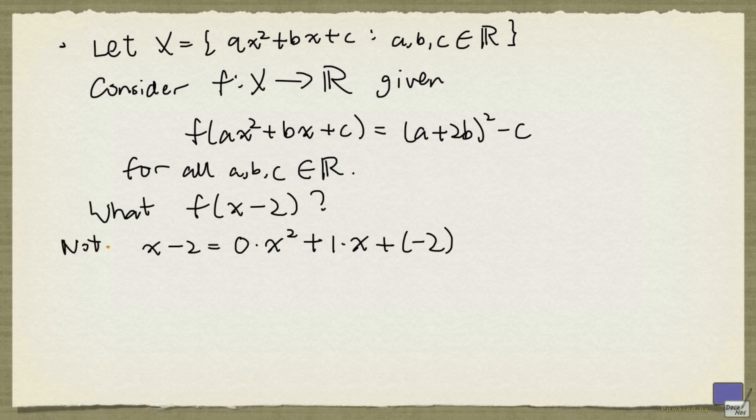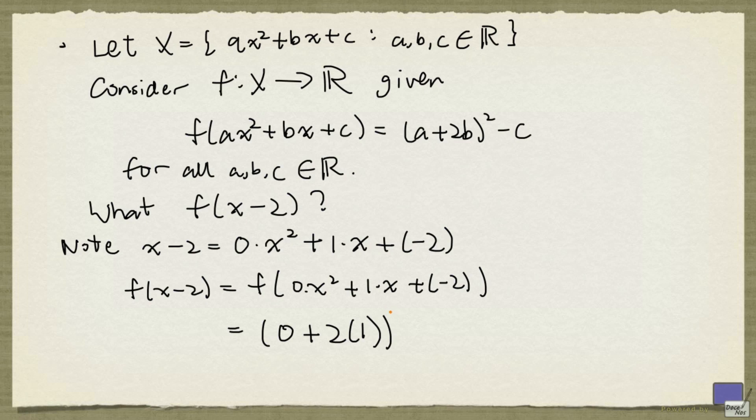So f(x - 2) is simply f(0x² + 1x + (-2)). And now all we have to do is just plug these numbers into a, b, and c respectively. So I have (0 + 2×1)² - (-2). And this gives us 2² + 2, which is 4 + 2, and that's equal to 6.